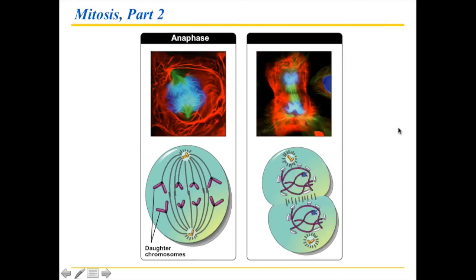In anaphase — the next phase — the spindle is starting to be disrupted. You can see a division forming as some chromosomes are traveling one way and some the other. Hopefully they haven't gotten in each other's way, making this a nice, simple mechanism. The spindle fibers are lengthening and moving the chromosomes apart.